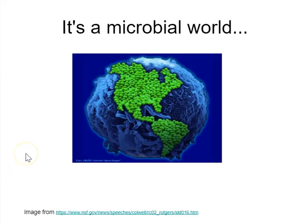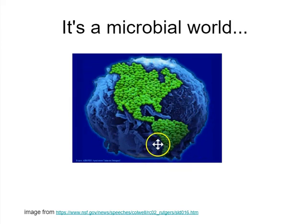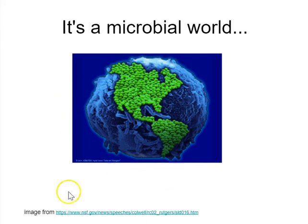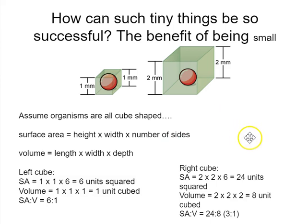It's a microbial world. Anywhere you go on the planet, you are going to find microbes — all sorts of different habitats, some within millimeters of one another, many different kinds of microbes, fewer in some areas, more in others. Microbes occupy every conceivable habitat on the planet. Another way of saying that is microbes are ubiquitous — they're found everywhere.